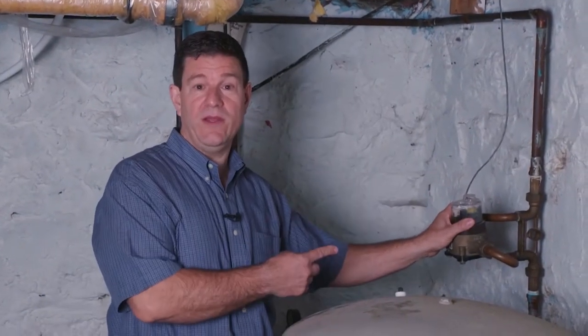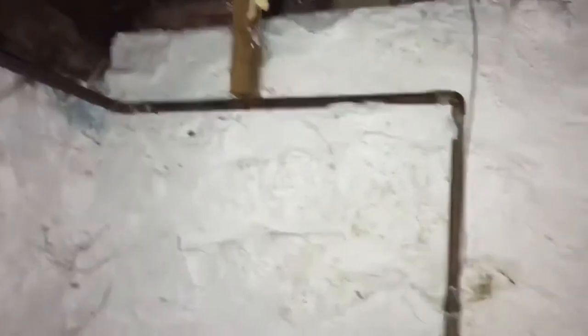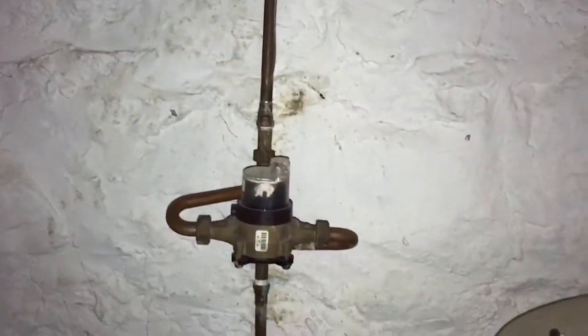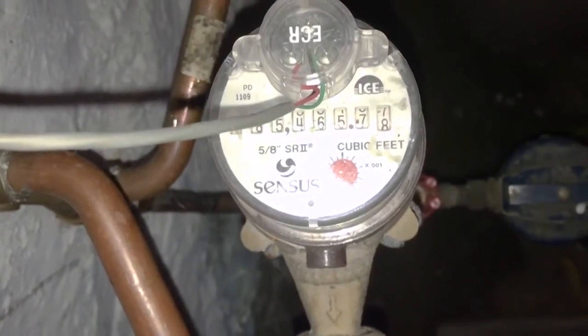First, you want to check your home's water meter. This is going to be able to tell you whether you have any leaks within your home. Check the number on your water meter before and after a two-hour period when no water is being used. If the number goes up, you probably have a leak.